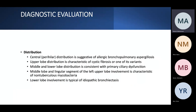Distribution can help differentiate the cause. Central distribution is more suggestive of allergic bronchopulmonary aspergillosis. Upper lobe dominant suggests cystic fibrosis or its variants. Middle and lower lobe distribution points toward primary ciliary dyskinesia. Middle lobe and lingula involvement is associated with non-tuberculous mycobacteria infection. Lower lobe and lingula distribution may indicate idiopathic bronchiectasis.